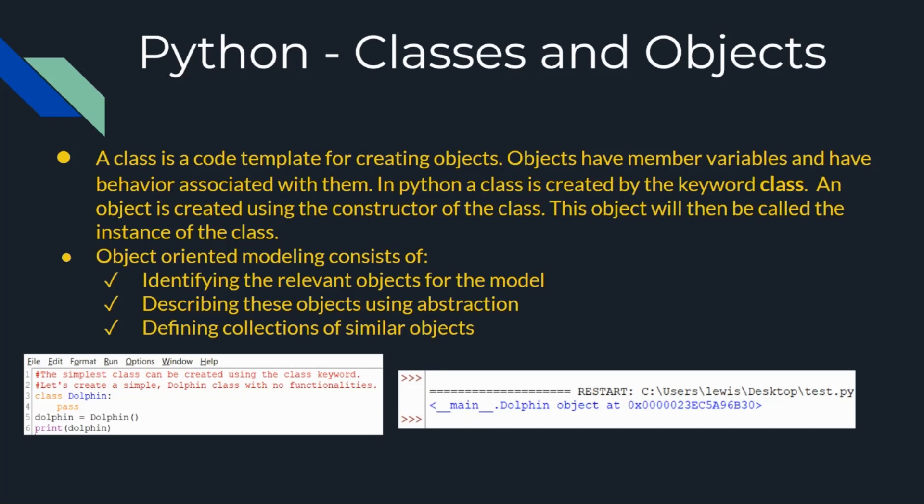For this Python program, the purpose is to walk through an example of the classes and objects polymorphism concept. A class is a code template for creating objects. Objects have member variables and have behavior associated with them. In Python, a class is created by the keyword class. An object is created using the constructor of the class. This object will then be called the instance of the class.